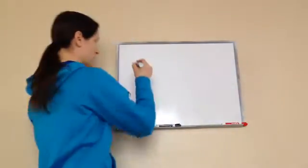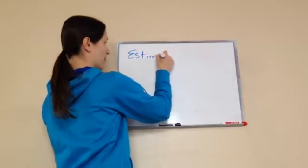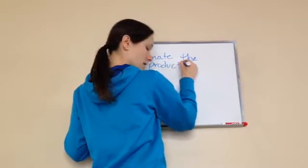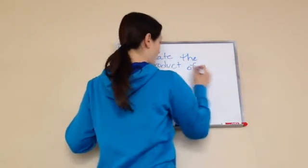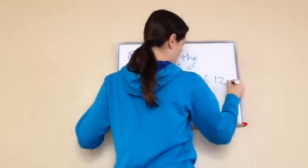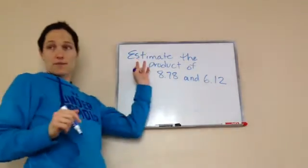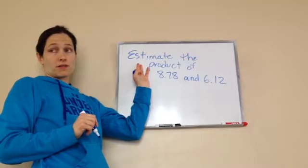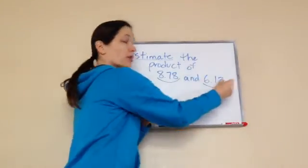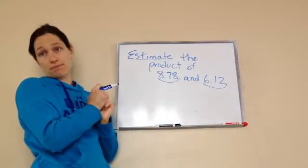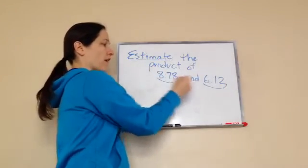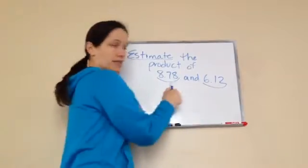Here's what this problem says — estimate the product of 8.78 and 6.12. What does estimate mean? Estimate means that you're going to round first, then answer the problem. And product means the answer to a multiplication problem. So what are they wanting us to do? Round the numbers, then multiply them.